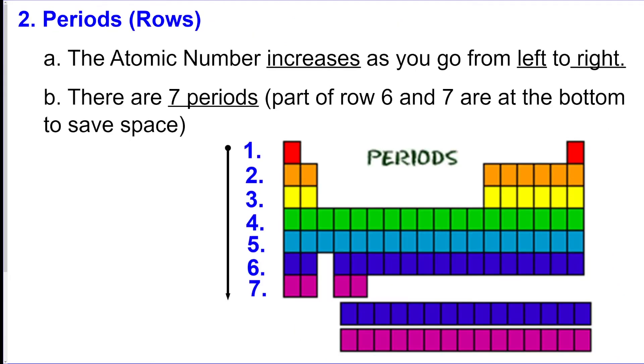The first thing to know is that the rows are called periods. They go this way: one, two, three, four. There's seven total periods on the periodic table.